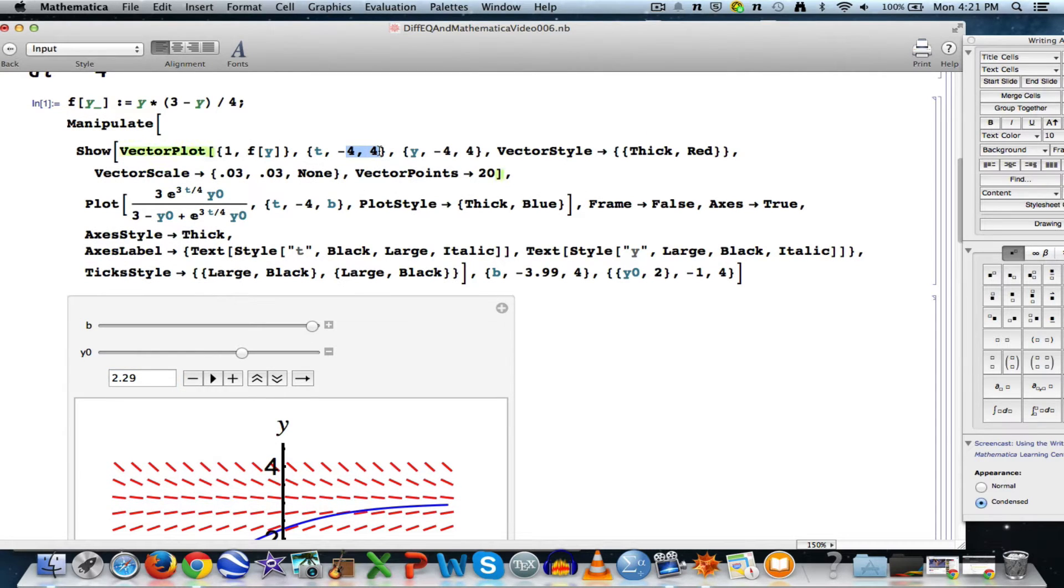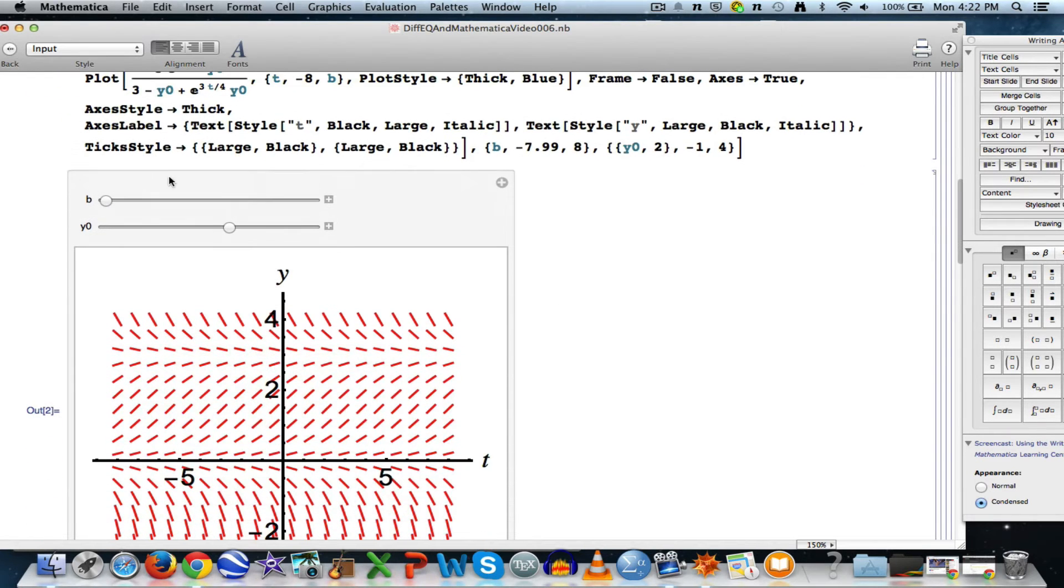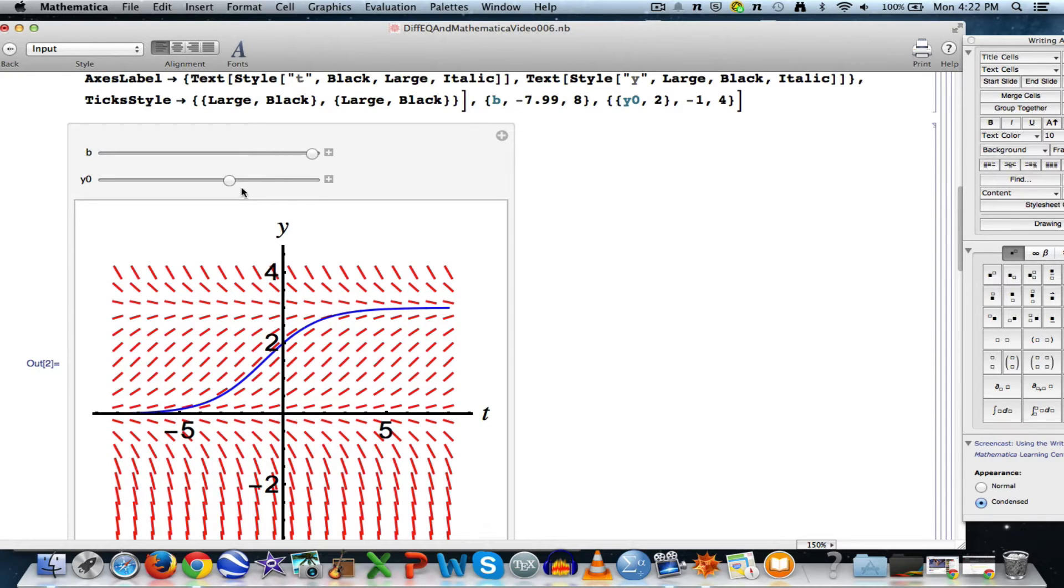It's a little bit more clear if I make the plotting window bigger, like going from negative 8 to 8 here. I'll change the starting value of b to be negative 7.99 and go up to 8. Make b go all the way to the right.